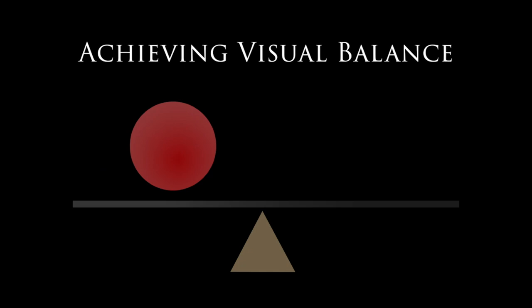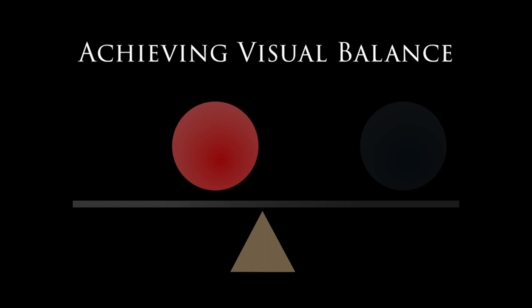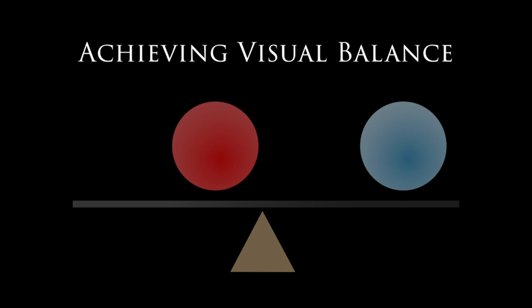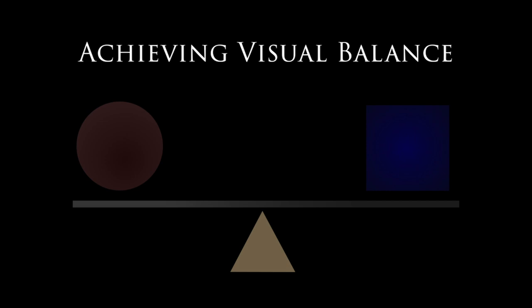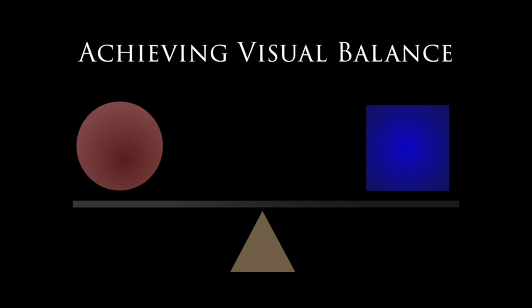Another way to achieve balance is when you put your visually heavier object closer to the center of your composition — you can balance that out with a slightly visually lighter object somewhere around your edge. The lighter an object is visually, the further from the center it has to be placed in order to balance out that weightier object, because it's dragging your eye along.